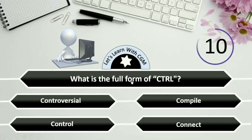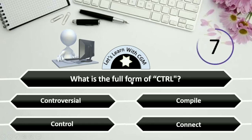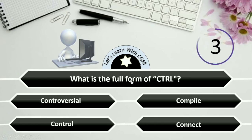What is the full form of CTRL? Options are Controversial, Compile, Control, or Connect.